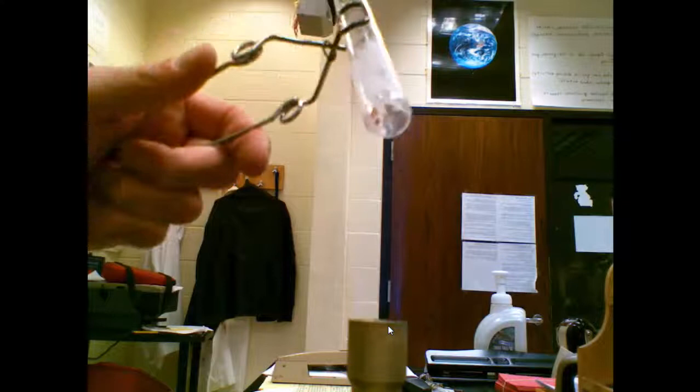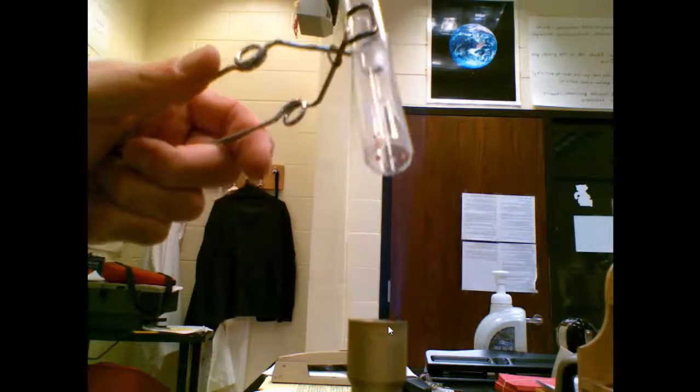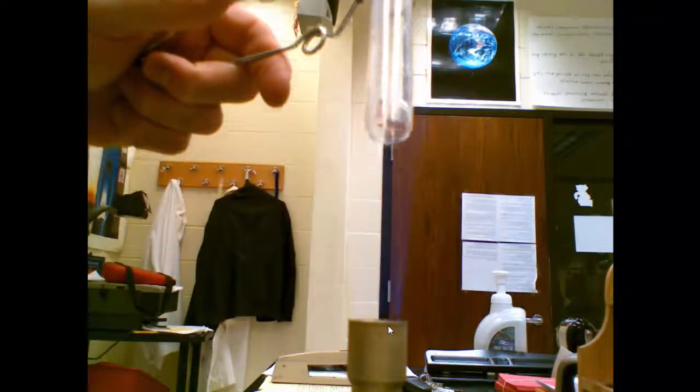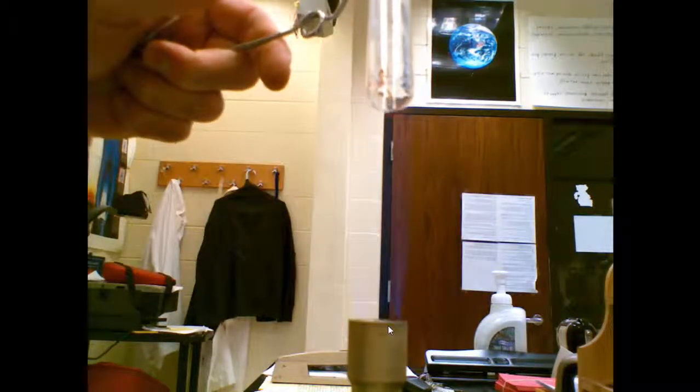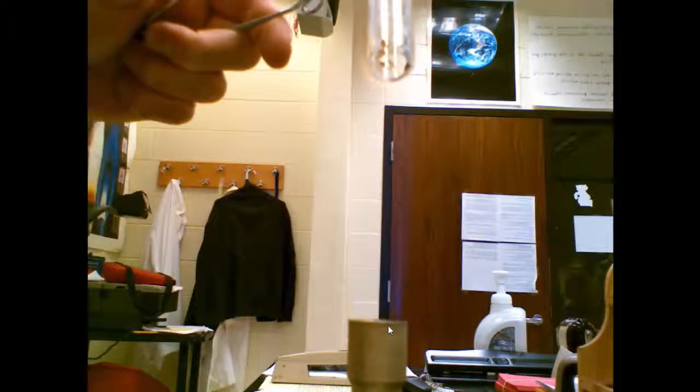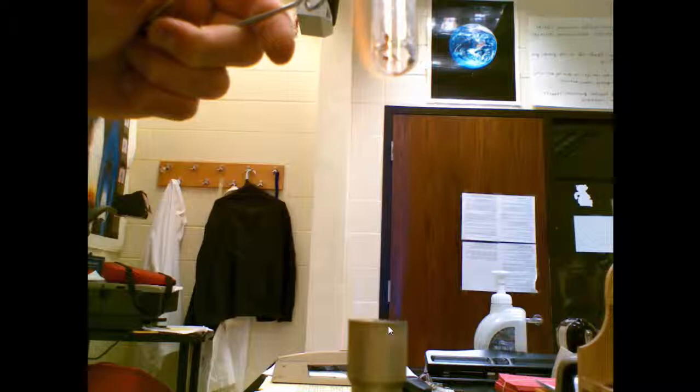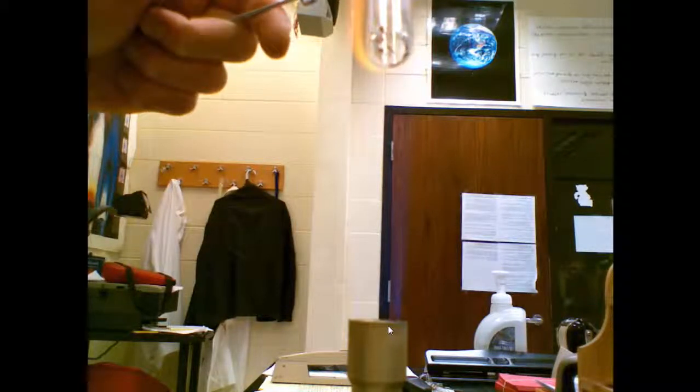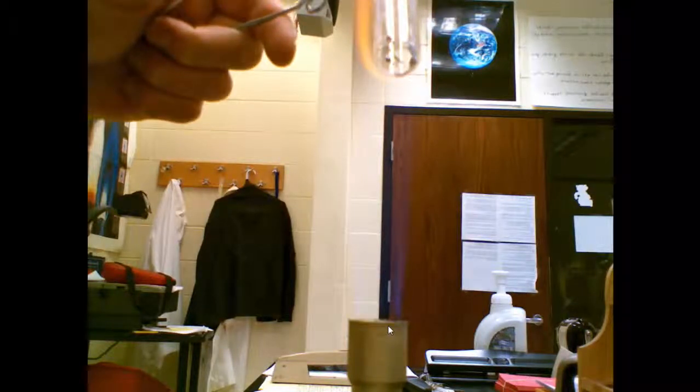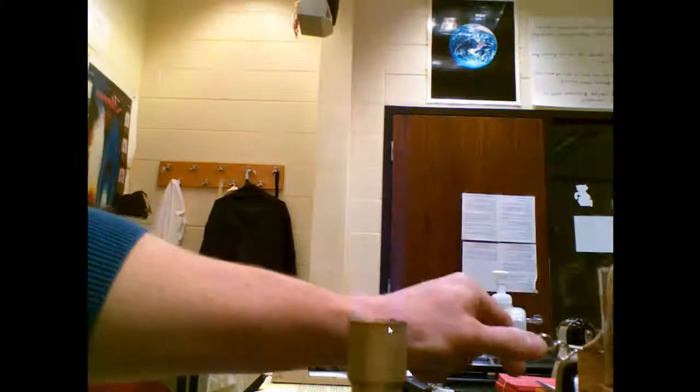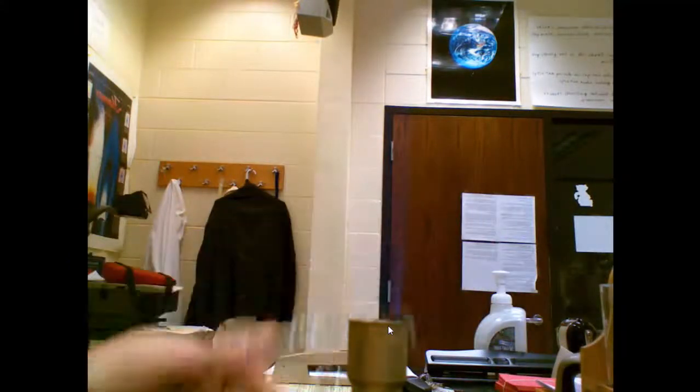So in the Bunsen burner, this crystal is not melting right away. The flame is starting to turn yellow. Still no melting. So this crystal does not melt inside our Bunsen burners. That would make that very high or greater than 500.